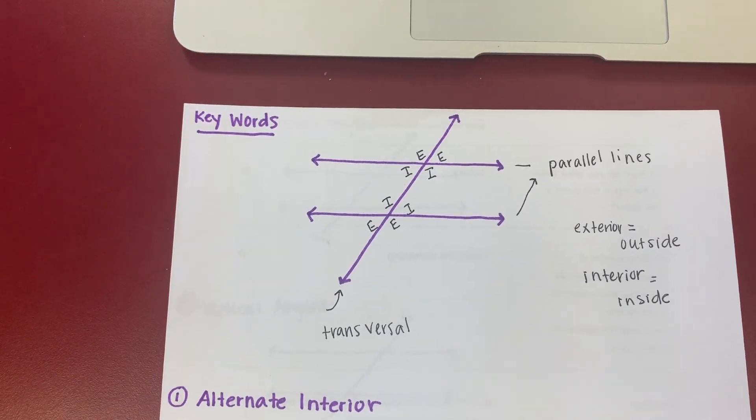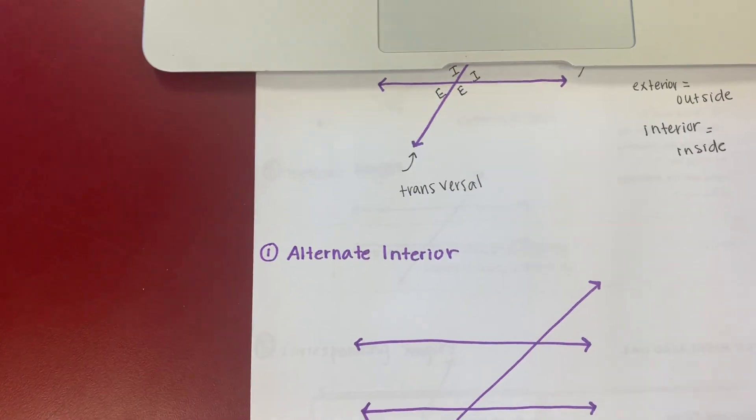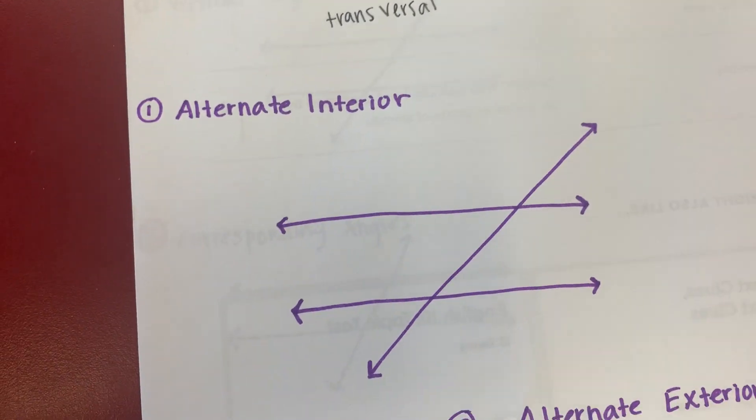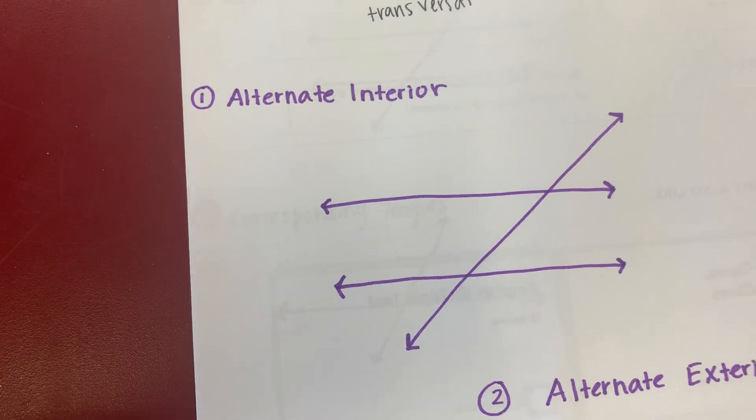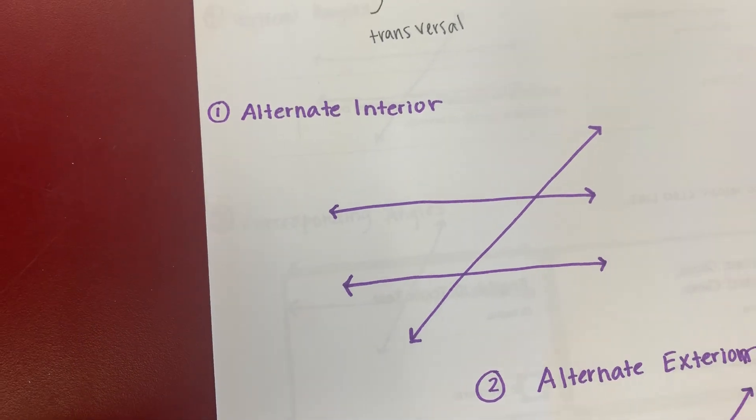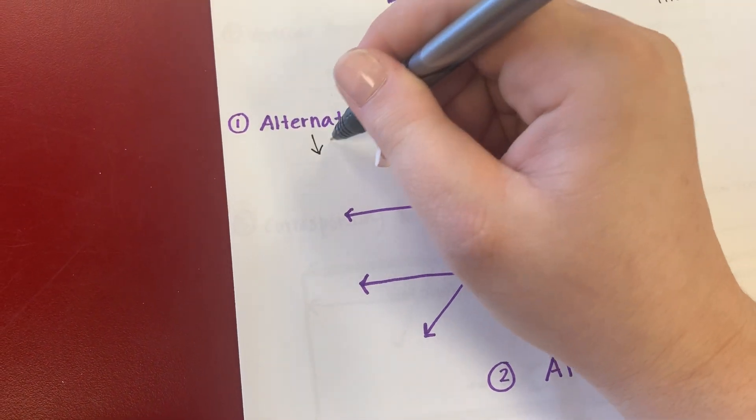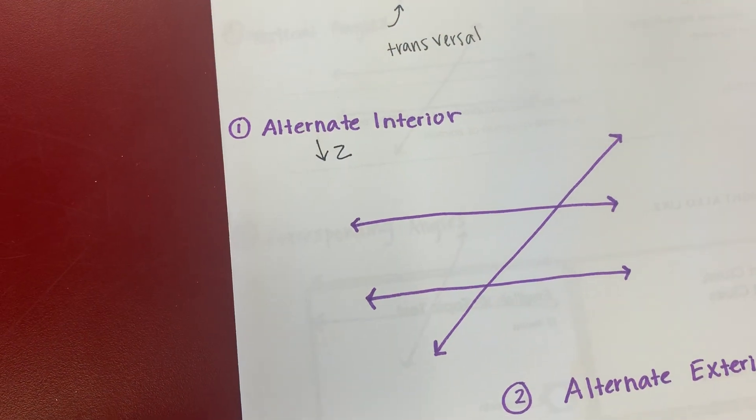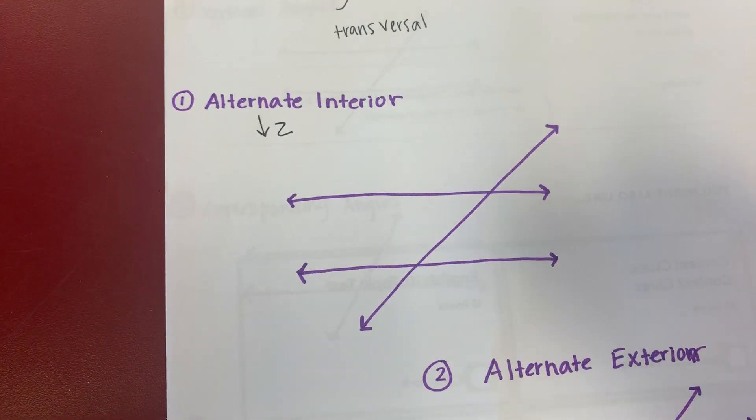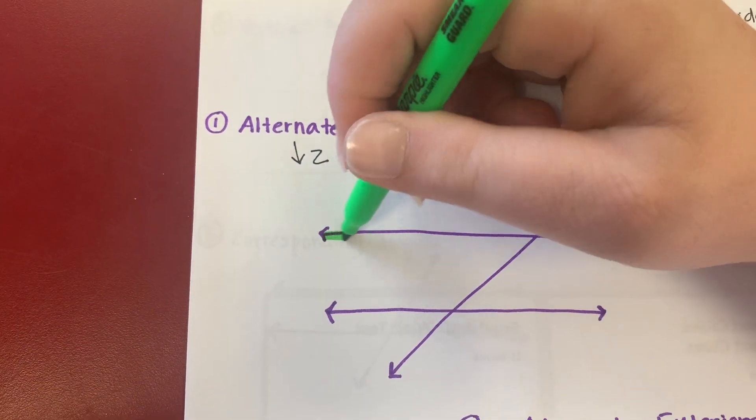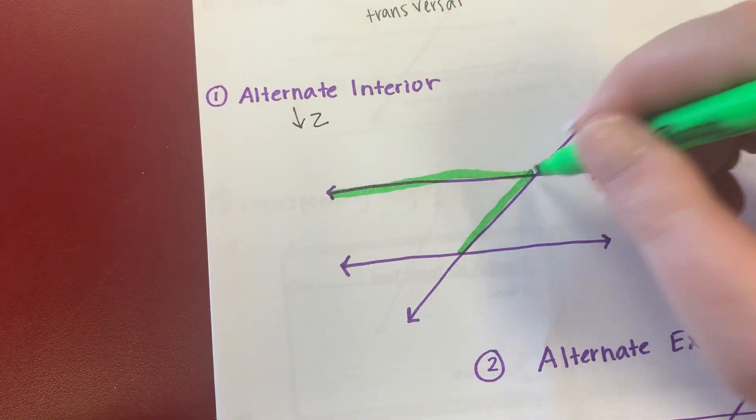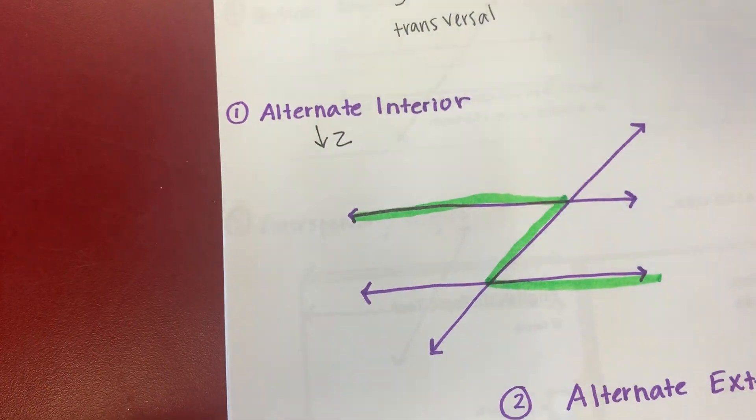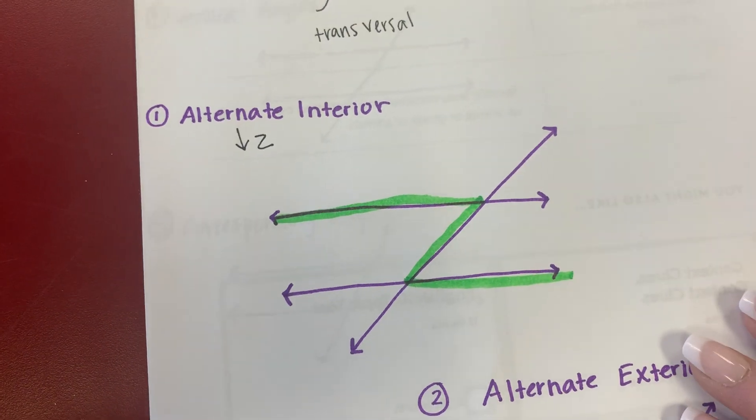Let's go forward into alternate interior. The biggest thing that you can learn about when you're doing anything with alternate, think about a Z every time. So I'm going to start this way and I'm going to make a Z. Now I have a Z.